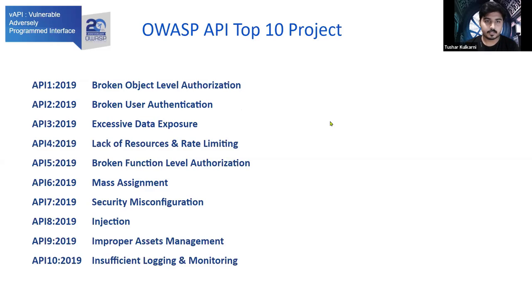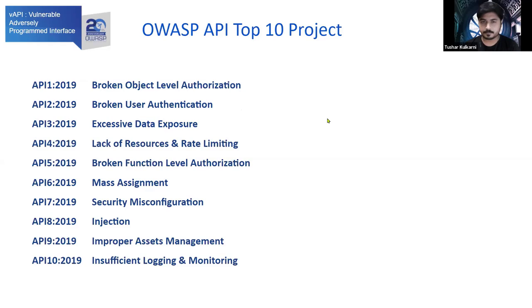Looking at the OWASP API top 10, you can see that injection is not at the top as compared to web applications — that's a key difference. There are other vulnerabilities like broken object level authorization and broken function level authorization, and you will get to see these kinds of vulnerabilities in the VAPI lab.